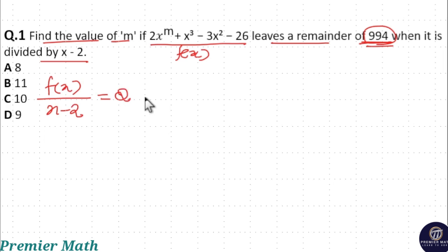This x - 2 goes a certain number of times into f(x)—consider this as quotient Q—and it leaves a remainder of 994, which doesn't divide x - 2.